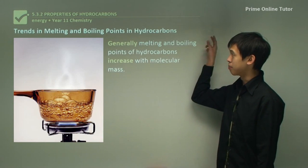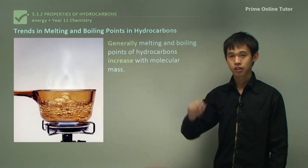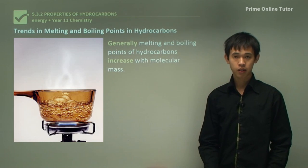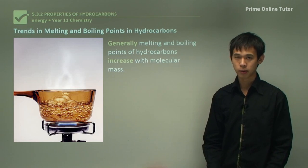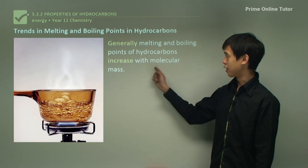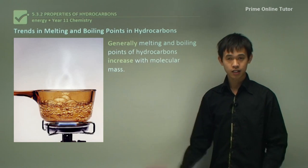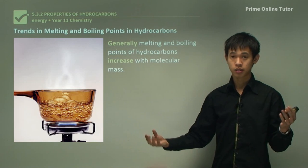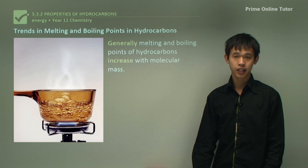First we'll talk about trends in boiling points and melting points. The trend for boiling point and melting point will be pretty much the same — it's just a change of phase — so mostly we'll just be considering boiling points. In general, melting and boiling points of hydrocarbons increase with their molecular mass. As the chains get bigger we tend to see increased boiling points, and that links back into our idea of fractional distillation.